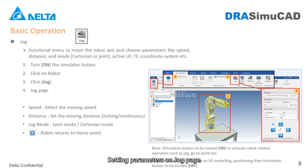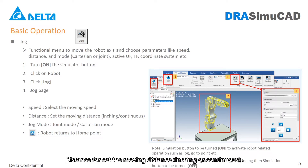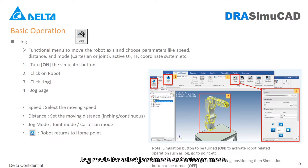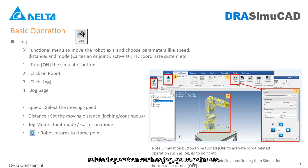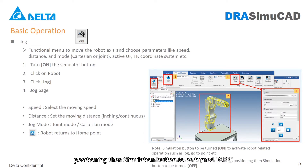Setting parameters on jog page: Speed — select the moving speed. Distance — set the moving distance, inching or continuous. Jog mode — select joint mode or Cartesian mode. Home button — robot returns to home point. Simulation button must be turned on to activate robot-related operations such as jog and go to point. If the user is working on 3D modeling or positioning, the simulation button should be turned off.